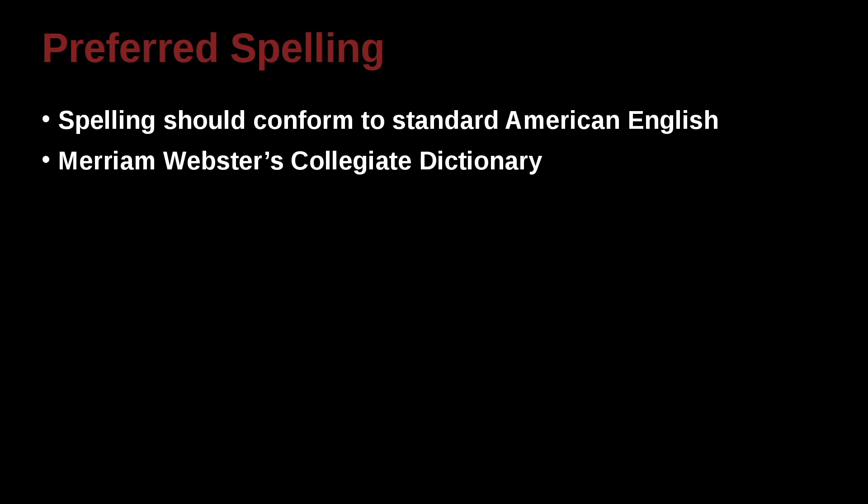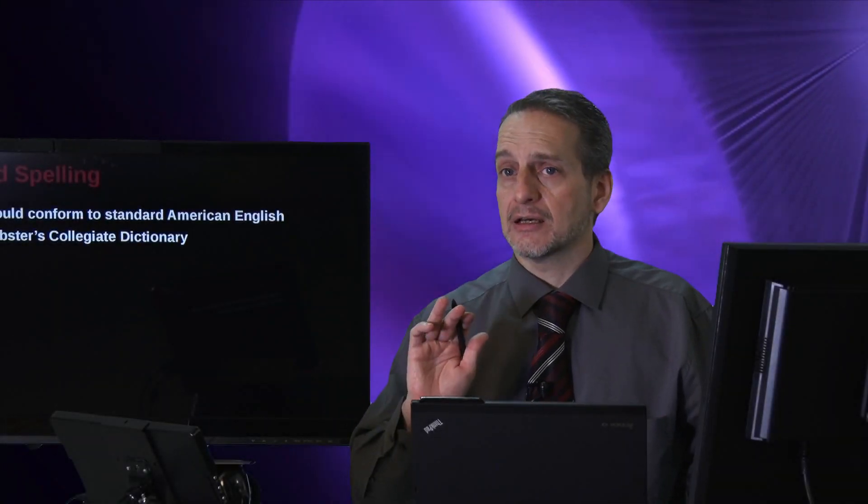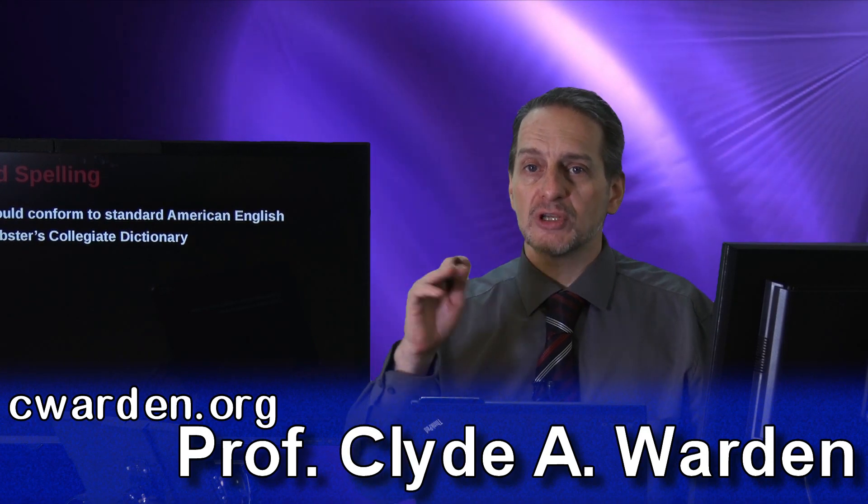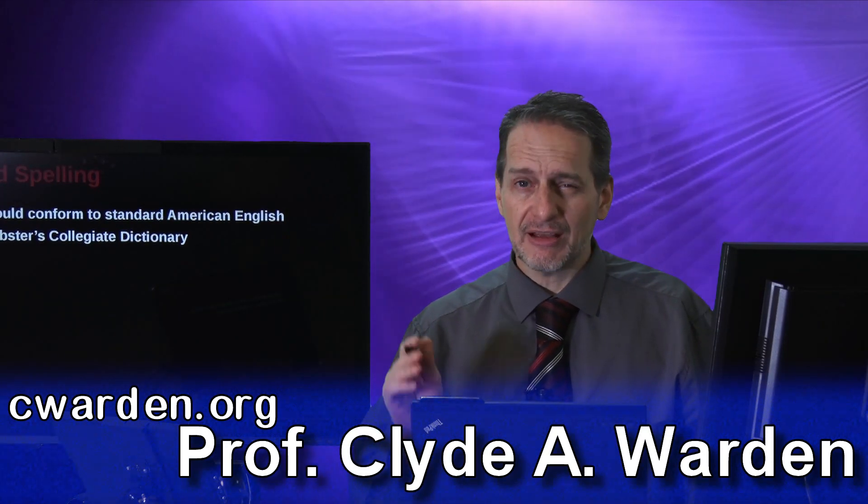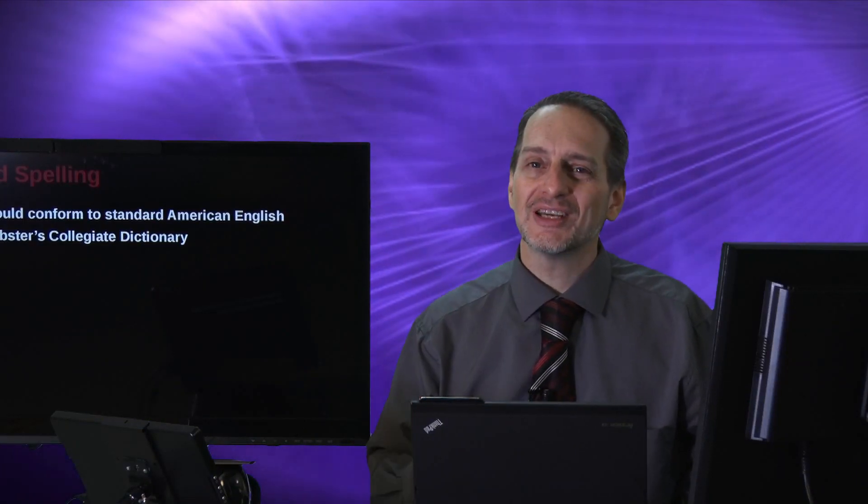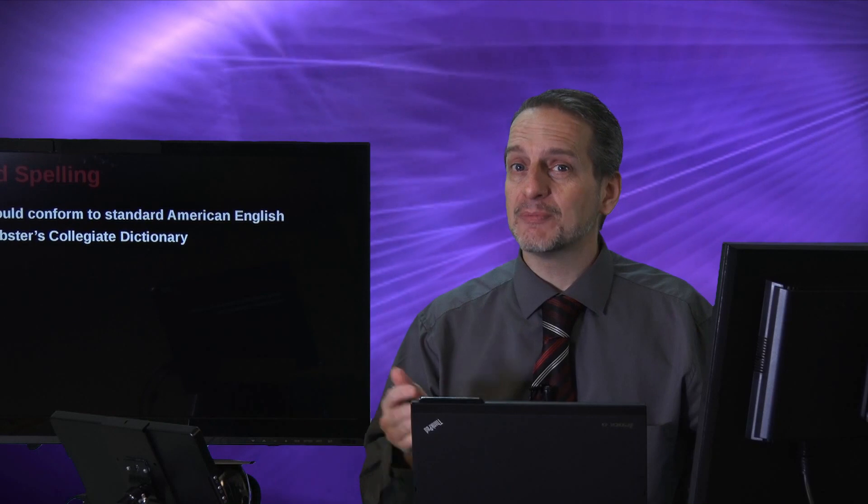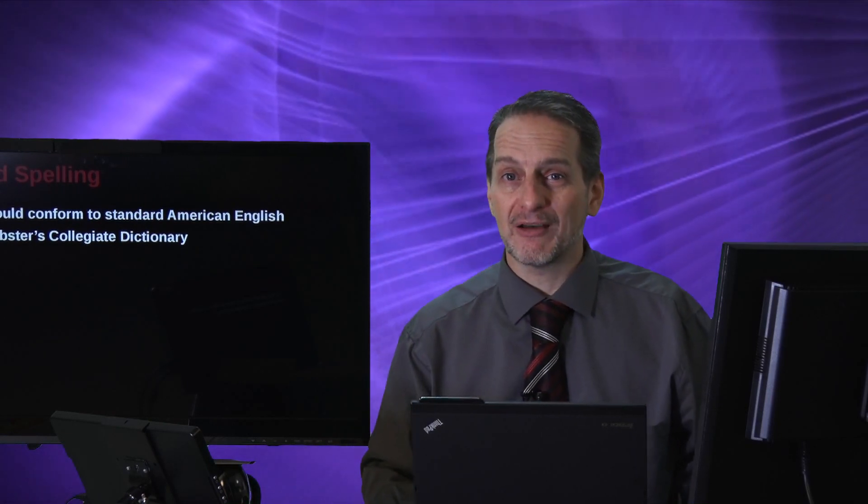How do you check what is the American spelling? The dictionary that the APA recommends is Merriam-Webster's Collegiate Dictionary, so you can get that online. In fact, they have a fantastic online app that you can use on your mobile phone or on your tablet. And if you get the paid version, they have lots of really great extras that I enjoy, like every day you learn a new word, and you get some really deep information about words.